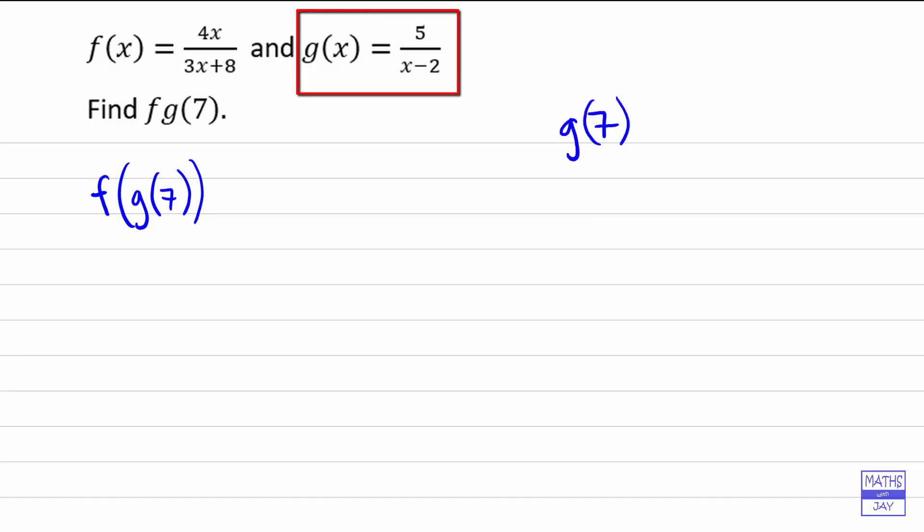So let's just work that out over here and all we need to do for that is put the 7 in instead of the x. So it's 5 over 7 minus 2 and so that's going to be 5 over 5 which is 1.